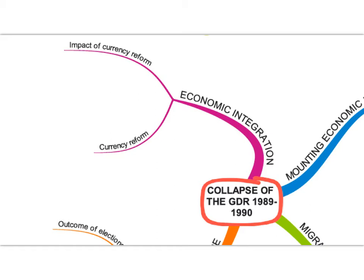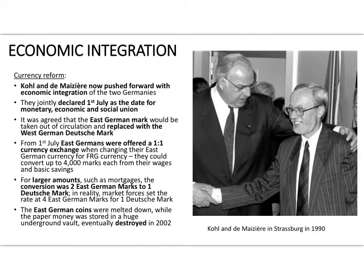The economic integration happened on the 1st of July 1990 — that was the first stage. Remember there was an election in East Germany on the 18th of March, and then de Maizière and Chancellor Kohl moved very quickly because the Alliance for Germany, which won the East German election, was completely in favour of moving to reunification as quickly as possible. The first step of Kohl's ten-point plan was economic integration.